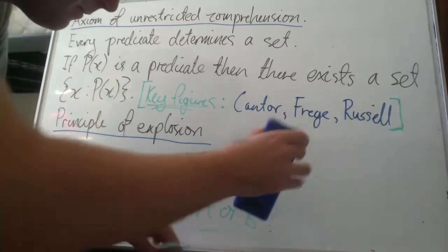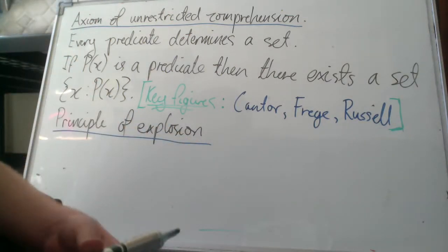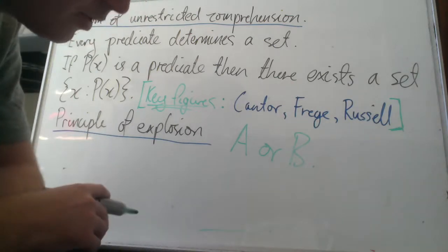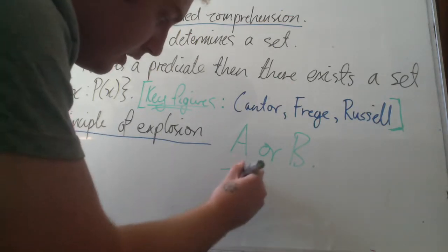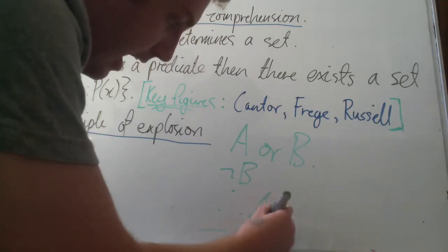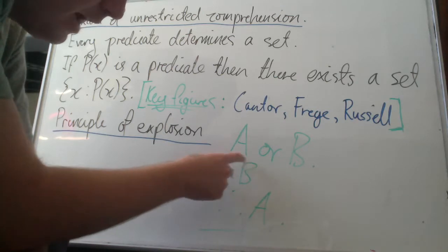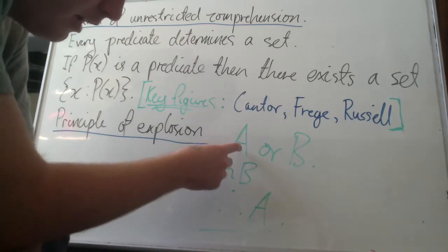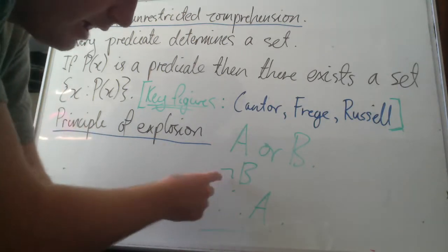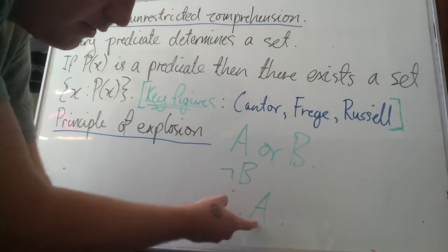The next concept is called a disjunctive syllogism. If we have A or B as true and we know not B, we can conclude A. This makes a lot of sense. This is the negation symbol. So if A or B is true, then either A is true or B is true or they're both true. In the case where B is false, since this disjunction is true, one of them has to be true, therefore A is true.